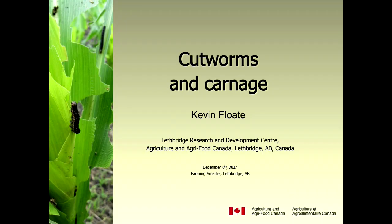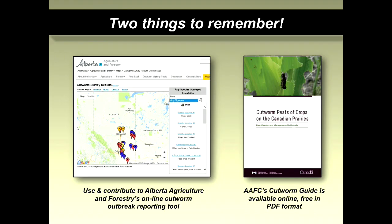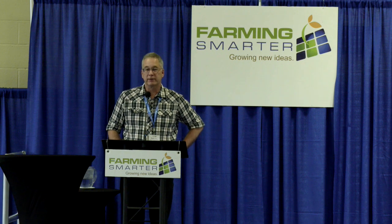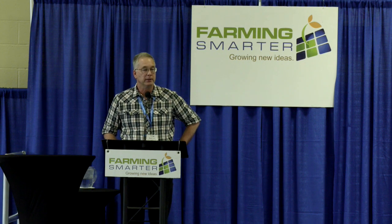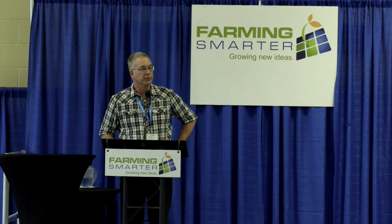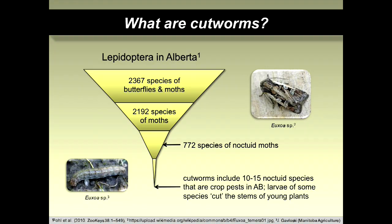It went live in 2015. They're asking producers to provide information on cutworm outbreaks they've encountered on their land. The information includes the rough land location, the number of acres affected, whether the producer opted to spray, the cutworm species, the crop being damaged, and the crop in the field the previous year.